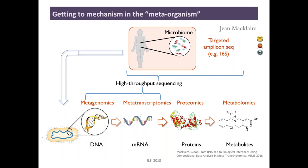If we want to get mechanism and function of the meta-organism that we are, we have to stop thinking about targeted amplicon sequencing — which is the vast majority of data collected today — and move to more functional omics like metagenomics, where we collect all the genes in an ecosystem; metatranscriptomics, which examines which of those genes are expressed and at what levels; proteomics or metaproteomics; and metabolomics — the small molecules used and produced by the ecosystem.